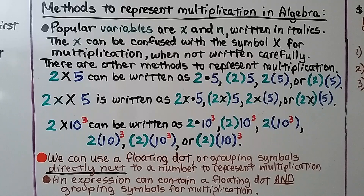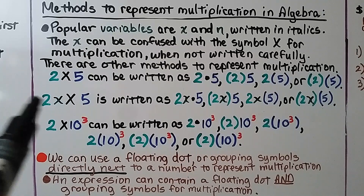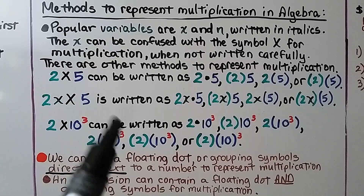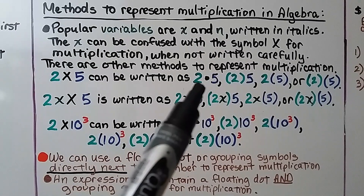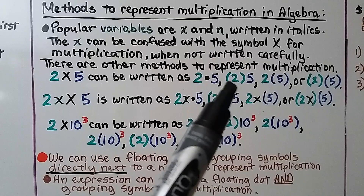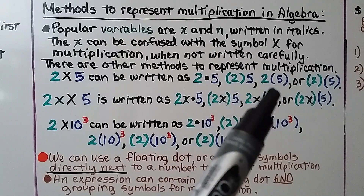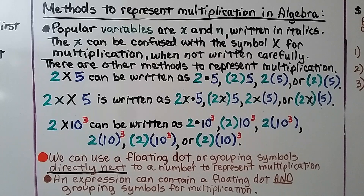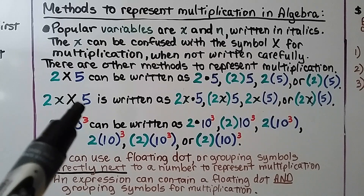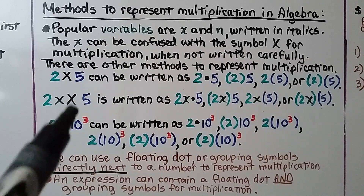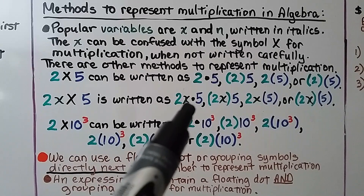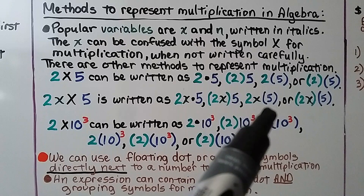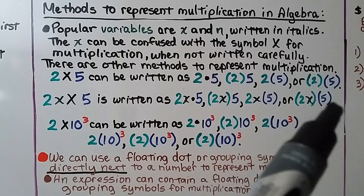There are other methods to represent multiplication. For 2 times 5: it can be written with the big × symbol, or as 2 with a floating dot and 5, or with 2 in parentheses, or 5 in parentheses, or both in parentheses. For 2x times 5: you'd write it as 2x with a floating dot then 5, or 2x in parentheses, or 5 in parentheses, or both in parentheses.